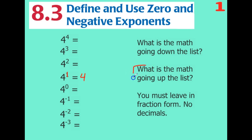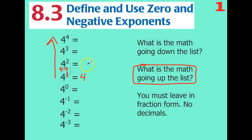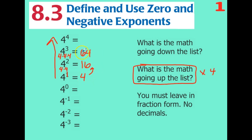We're going to figure out what the math looks like going up the list. Four to the power of two is really four two times, or four times four, which is 16. Four to the power of three is four times four times four. We're just multiplying by four one more time, so 16 times four gives us 64. Going up the list, every time I'm multiplying by four: four times four is 16, 16 times four is 64, 64 times four — plug that in your calculator — gives you 256.